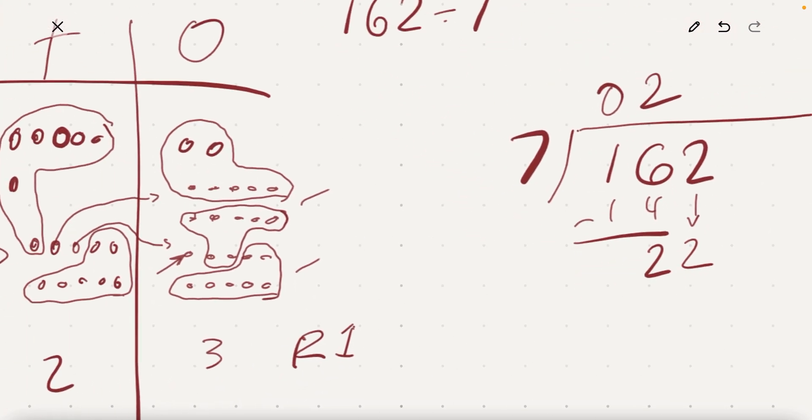So I'll just call it, oops, not remainder 7. It's only, there's only 1 of them. And then over here, right, how many ones did I just circle? I circled 3 groups of 7. That's 21. And that leaves 1 behind. And that was 3 groups right there. R1.